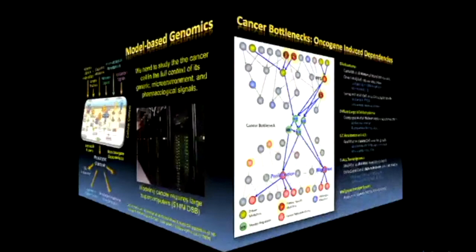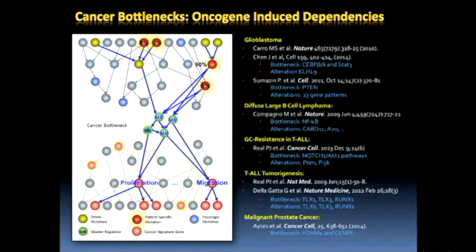The theory we formulated to address this paradox is that there are regulatory bottlenecks implemented by just a handful of proteins — about 10 or fewer. This bottleneck collects all the aberrant signals from upstream pathways that harbor mutations and activates downstream all the necessary programs required for tumor maintenance or progression. We were able to show that we could actually discover these bottlenecks in a large number of tumors, as shown in several papers.